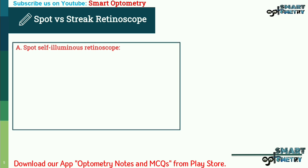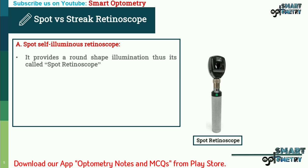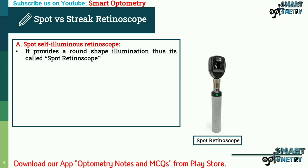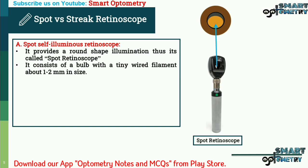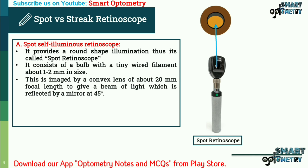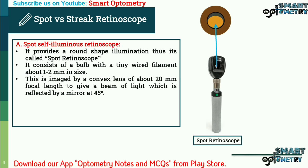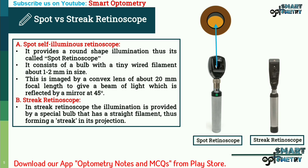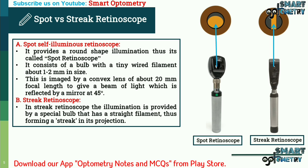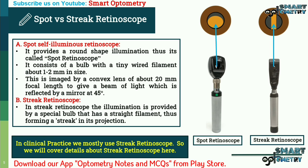Comparing spot versus streak retinoscopes: the spot self-illuminated retinoscope provides a round-shaped illumination and consists of a bulb with a tiny wire filament about 1 to 2 mm in size, imaged by a convex lens of about 20 mm focal length to give a beam of light reflected by a mirror at 45 degrees. In the streak retinoscope, illumination is provided by a special bulb with a straight filament, forming a streak in its projection. In clinical practice, the streak retinoscope is most commonly used.